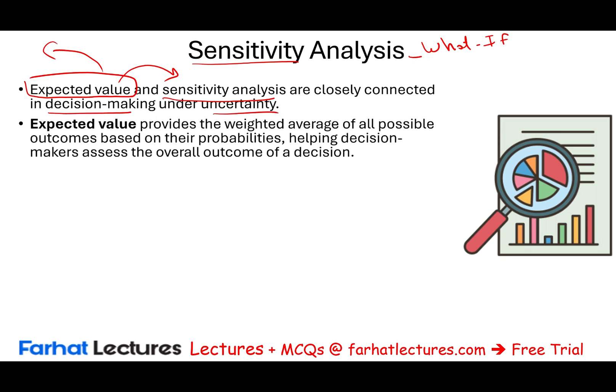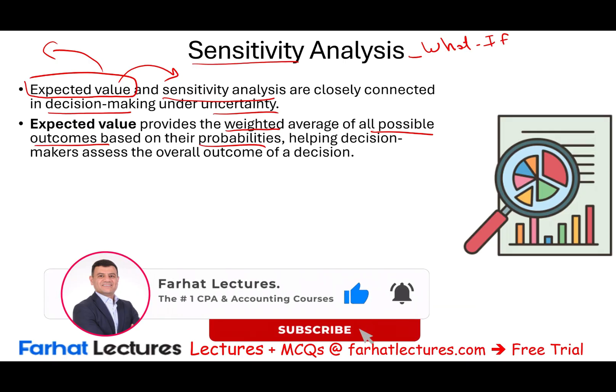Just a quick review: we'll work an example about expected value to explain sensitivity analysis. Expected value provides the weighted average of all possible outcomes based on their probabilities — outcome times probability — helping decision makers assess the overall outcome of a decision. Because we live in an uncertain world, we want to take all probabilities into account, so we take outcome times probability to figure out the expected value.